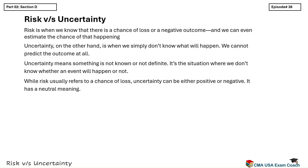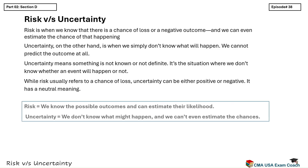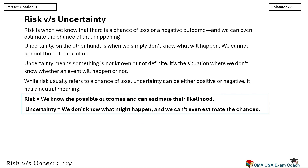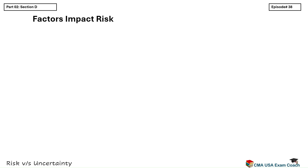Here's how you can remember the difference: Risk means we know the possible outcomes and can estimate their likelihood. Uncertainty means we don't know what might happen and we can't even estimate the chances. In business, both risk and uncertainty are important concepts. Managers and decision makers must know how to handle both — sometimes with data and sometimes just with good judgment and experience. Now let's look at what factors can increase or affect risk in a business situation.